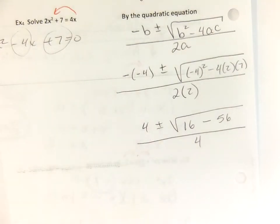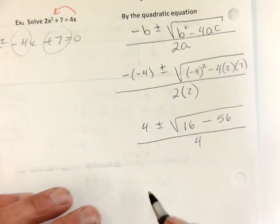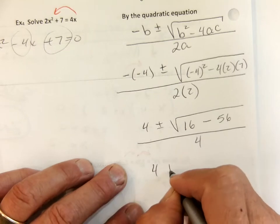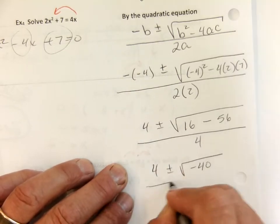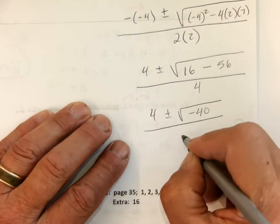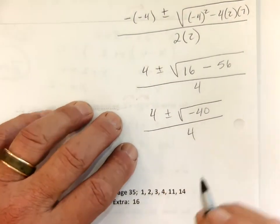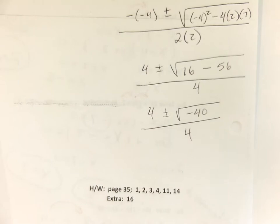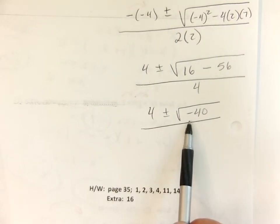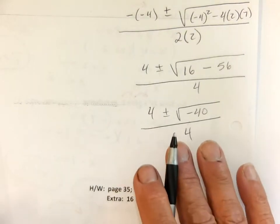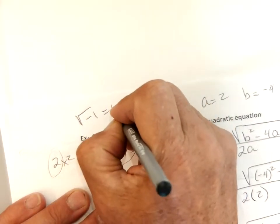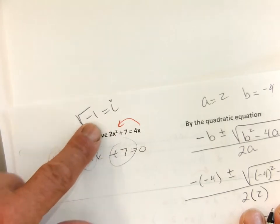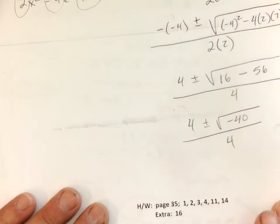4 plus or minus the square root of negative 40, uh-oh, I think we're going to have a problem. So we're going to have a square root of a negative number. We can do that. We're going to have to just remember that the square root of negative 1 is i. We're going to use that information to finish this up.